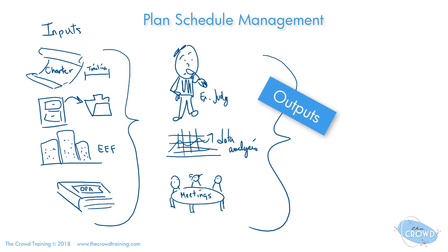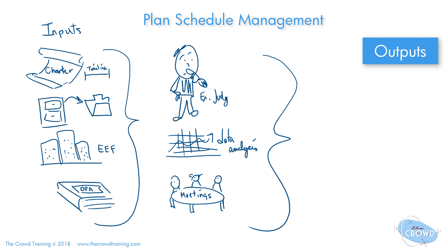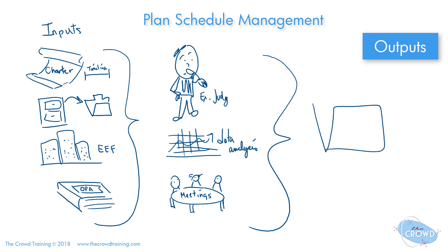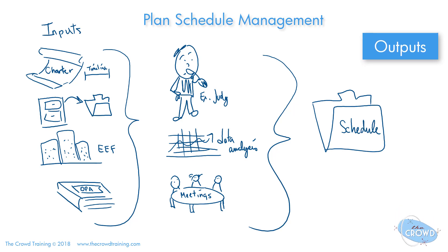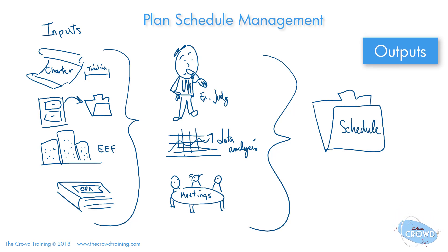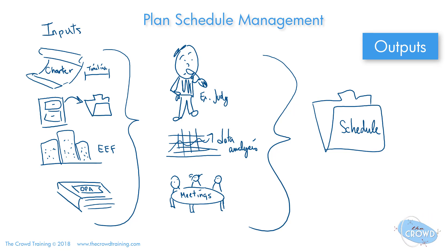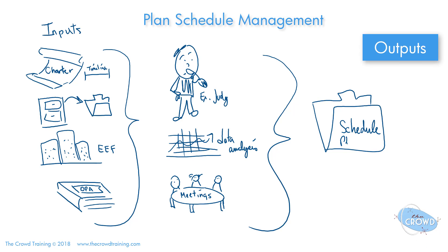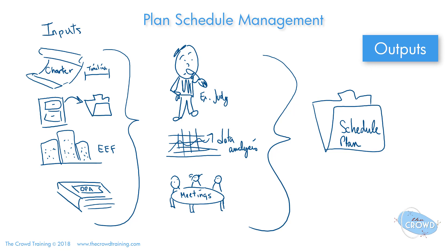Those are your tools and techniques. What you should get out of plan schedule management — the only output — is your schedule management plan. That makes sense because the whole idea is plan schedule management, so your output should be the schedule management plan: how you're going to do your work, the timing, the naming, all the different pieces. That's a quick look at the process of plan schedule management.